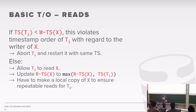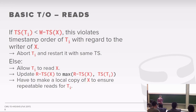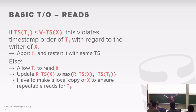Under basic timestamp ordering you also have to copy every object you read into a private workspace or local buffer. That way, if you go back and read the same object again, you're guaranteed to get the same value. Without locks, another transaction could overwrite the object between your reads, forcing an abort. To avoid that and maintain repeatable reads at serializable isolation, you keep a local copy.